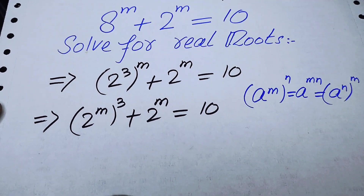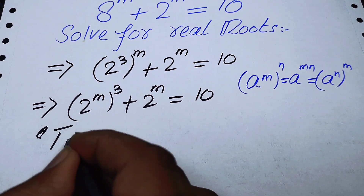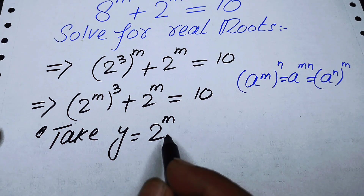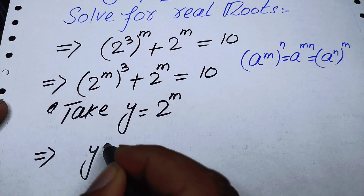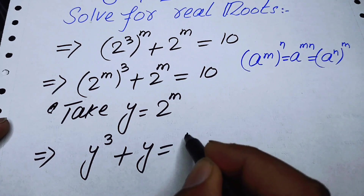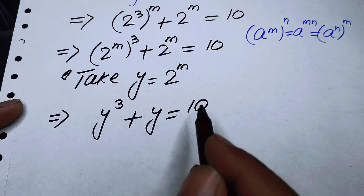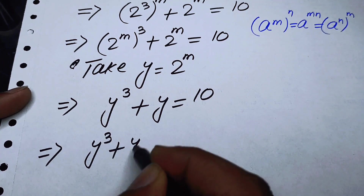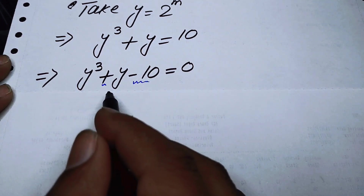So now I can interchange its exponents and write it as 2 to the power of m cubed plus 2 to the power of m is equal to 10. We can write this expression in simplified form by taking y equal to 2 to the power of m, so this expression becomes a cubic equation: y cubed plus y is equal to 10. Taking 10 to the left hand side, we get y cubed plus y minus 10 is equal to 0.